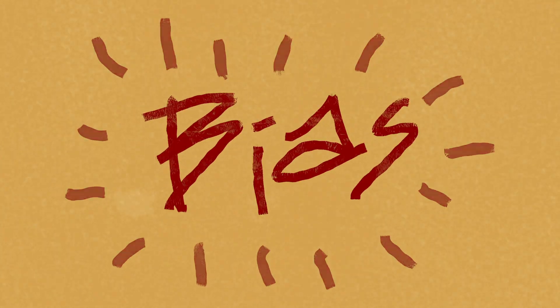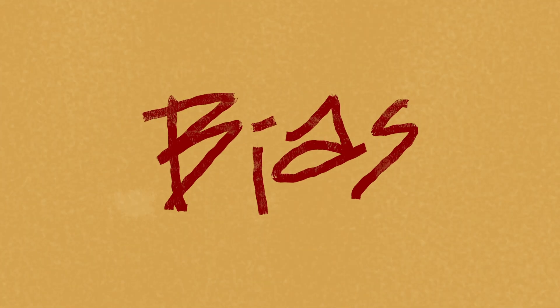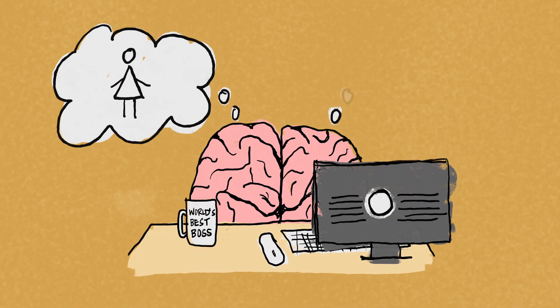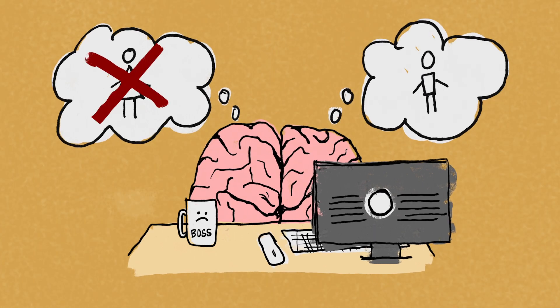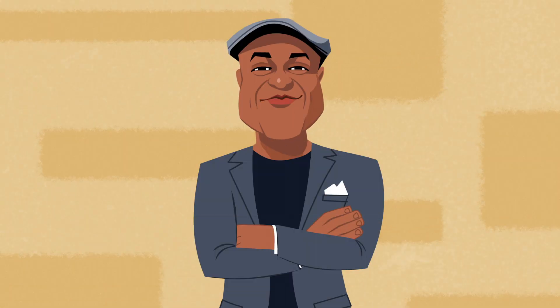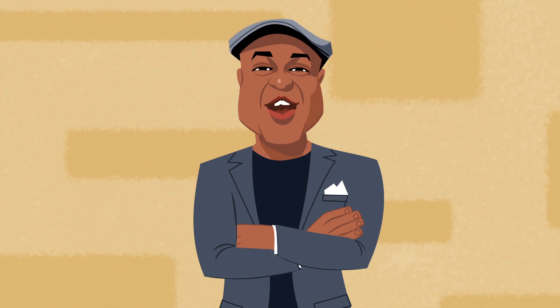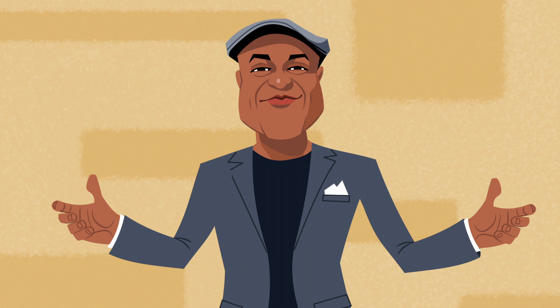On the flip side, bias can also be straight up discrimination. Like if you actively choose not to hire a person solely because she's a woman. That's just being sexist. So, as long as we don't explicitly act on nasty biases about other people, we're good, right?